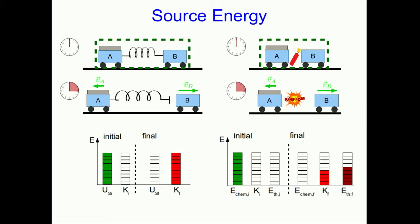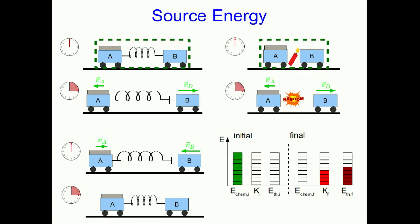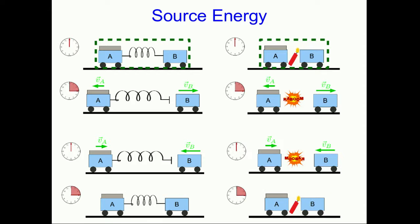But you can really see the difference if you think about something different. If you reverse the interaction, you can reverse the interaction with the two carts in the spring. You can have the carts move towards each other and compress the spring and convert kinetic energy back into spring potential energy. However, there is no way you can have the carts move towards each other, make the explosion go in reverse, so that it says move back instead of kaboom, and have the firecracker reform.